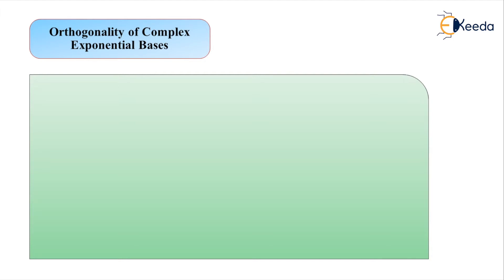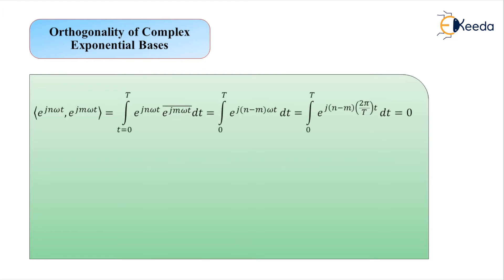In all three situations — the unit function with a complex exponential, two complex exponentials with indices summing to nonzero, and two complex exponentials with unequal indices — the inner product integral comes out equal to zero. This confirms that all three cases satisfy the condition of orthogonality for the complex exponential basis.